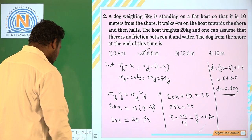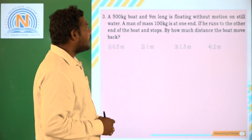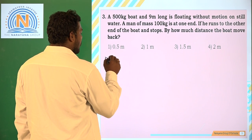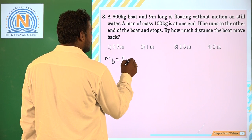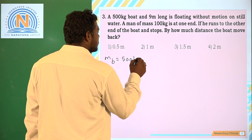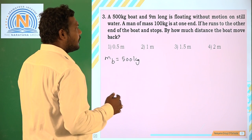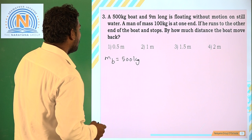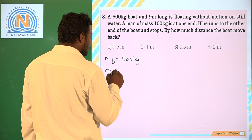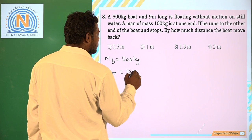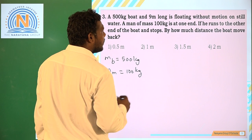Now let us get into the third question. A boat of 500 kg and 9 meters long is floating. So mass of the boat is 500 kg. The length is 9 meters long. And mass of man is 100 kg.